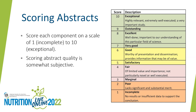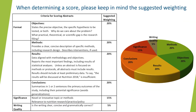When determining an abstract score, consider each component and attribute and award a score from 1 to 10, where 1 is incomplete and 10 is exceptional. The table on the right provides additional details about each number in the rating scale. You will receive an abstract reviewer guide with these instructions. We understand that scoring abstract quality is somewhat subjective, so please use your best judgment. The suggested weighting is: objectives, methods, results, and conclusions each at 20%; significance at 15%; and writing quality at 5%.